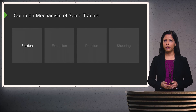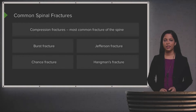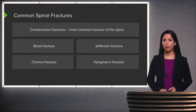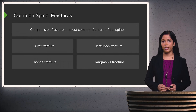Common mechanisms of spine trauma include a flexion injury, an extension injury, a rotational injury, or a shearing abnormality. The most common fracture of the spine is the compression fracture.